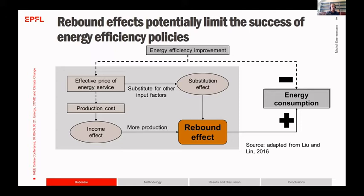An energy efficiency improvement reduces the effective price of an energy service because it allows producing the same amount of goods or services with less energy. That could incentivize firms to substitute other production factors — such as labor, capital, or materials — for energy, which in turn increases energy use again. There is also the income effect, where lower effective energy service prices reduce production costs, incentivizing more production and increasing energy use.